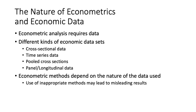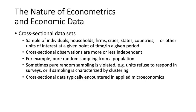Econometric methods depend on the nature of the data used. Use of inappropriate methods may lead to misleading results. For example, if you have time series data and analyze it as cross-sectional data, this ends up with what we call spurious regression or false regression. In this case we cannot depend on the result of the estimated model — it is a big mistake and very dangerous.